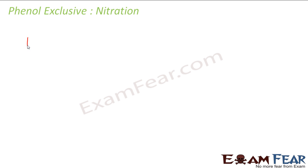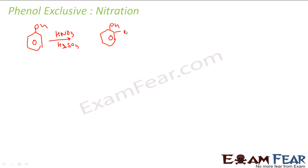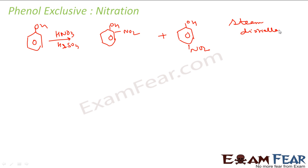Let's see the nitration reaction. Phenol reacts with dilute nitric acid in the presence of some sulfuric acid to give ortho and para nitrophenol. The ortho and para products can easily be separated because ortho-nitrophenol has intramolecular hydrogen bonding so its boiling point is lower, while para-nitrophenol has intermolecular hydrogen bonding so its boiling point is higher. You can easily separate them by steam distillation because they have different boiling points.